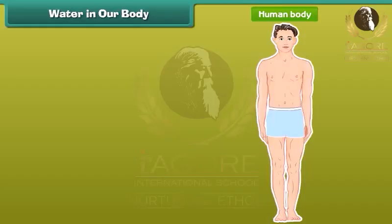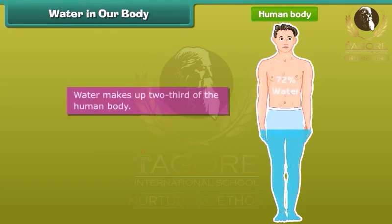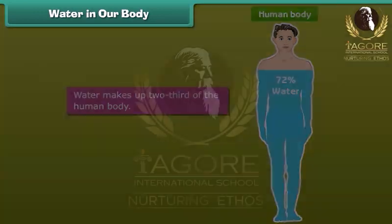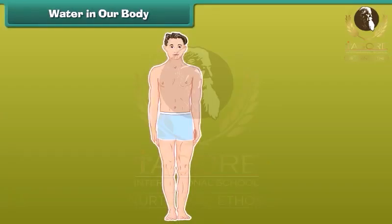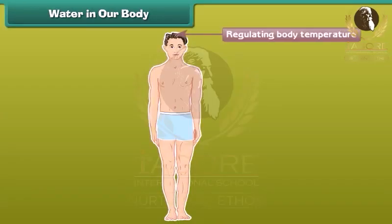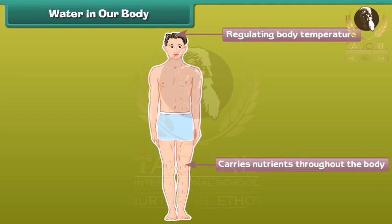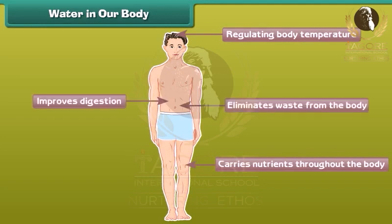You will be surprised to know that water makes up two-thirds of the human body. It plays a critical role in regulating body temperature, carries nutrients throughout the body, improves digestion and eliminates waste from the body.